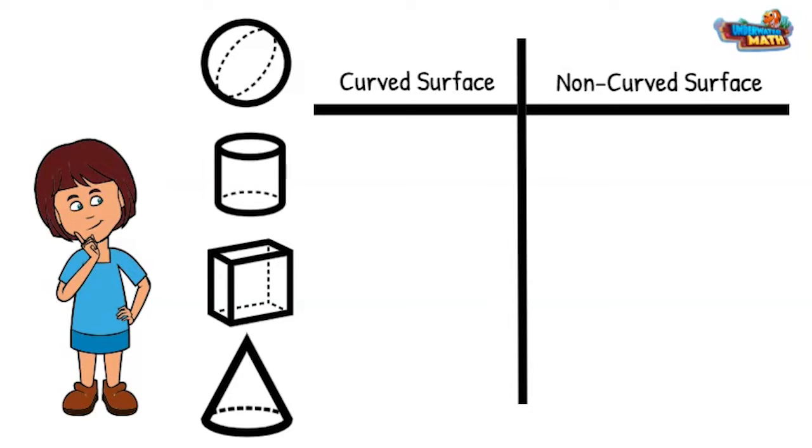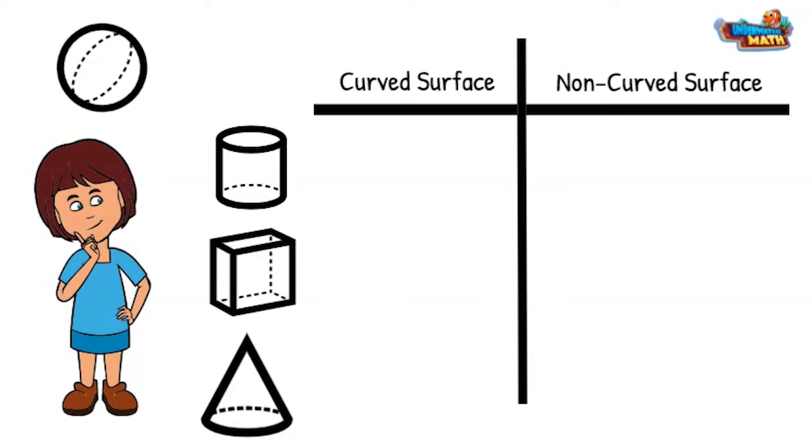Start with a sphere. This shape has no edges, faces, or vertices. It looks like a ball. Balls roll pretty easily. This is a curved surface shape.